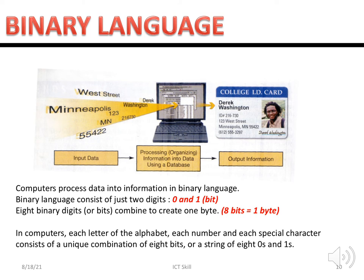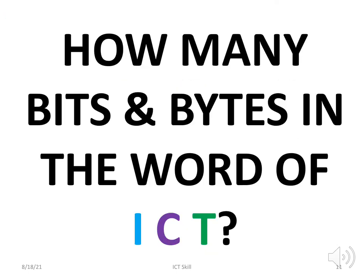Binary language is how the computer processes data. The computer processes using binary language, which consists of only two digits: zero and one. Each character, number, or alphabet represents one byte, and one byte equals eight bits. For example, the word ICT has three alphabets, so it represents three bytes.